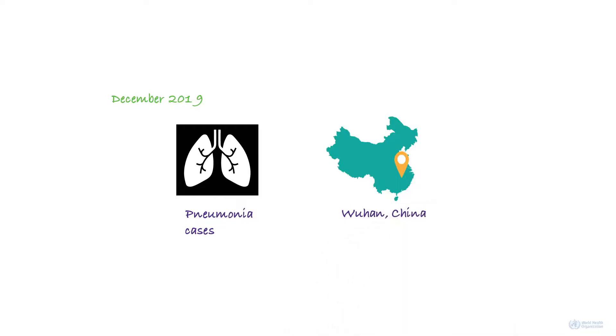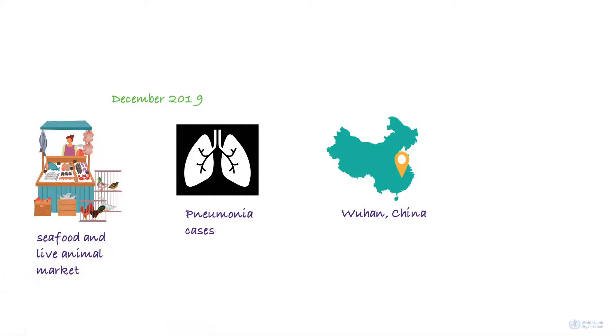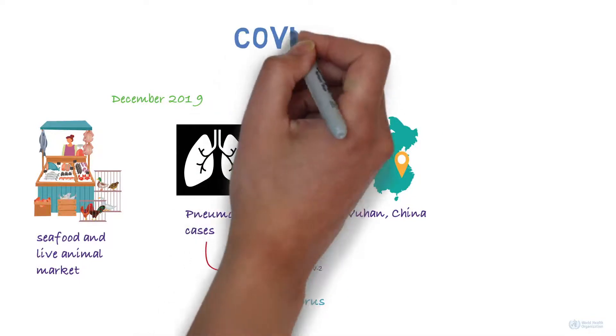In December 2019, there was a cluster of pneumonia cases in the city of Wuhan in China. Some of the early cases had reported visiting or working in a seafood and live animal market in Wuhan. Investigations found that the disease was caused by a newly discovered coronavirus. The disease was subsequently named COVID-19.